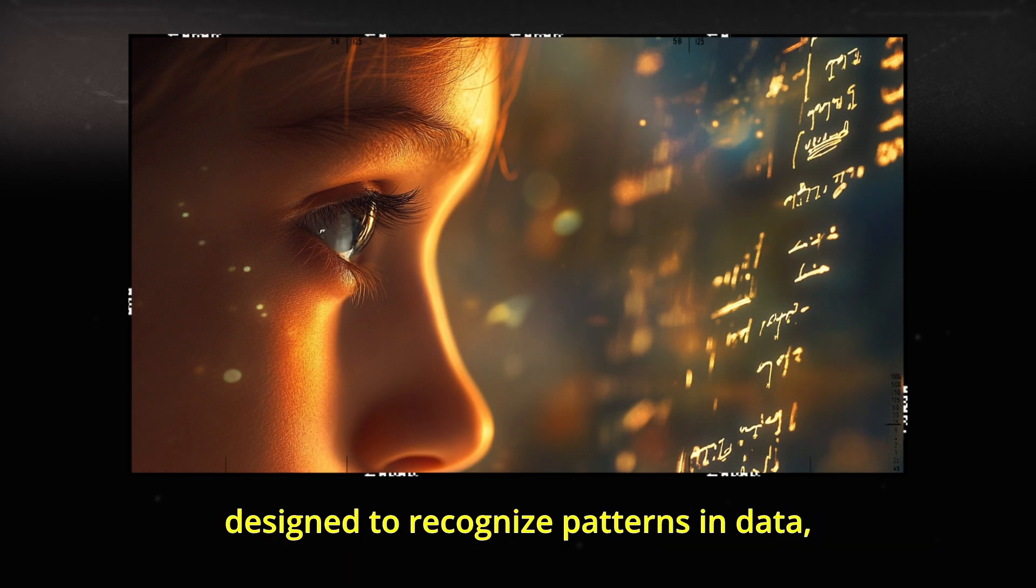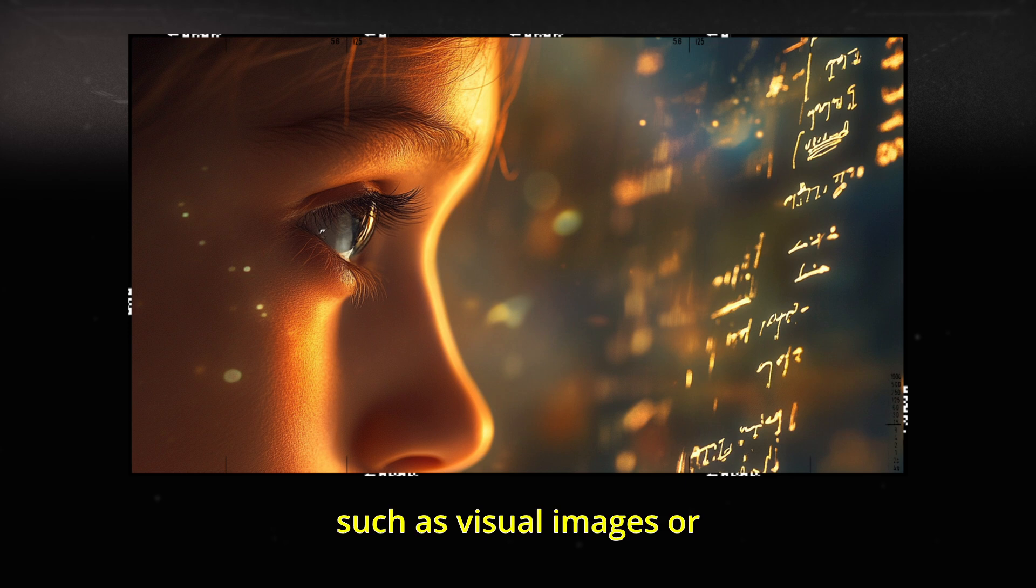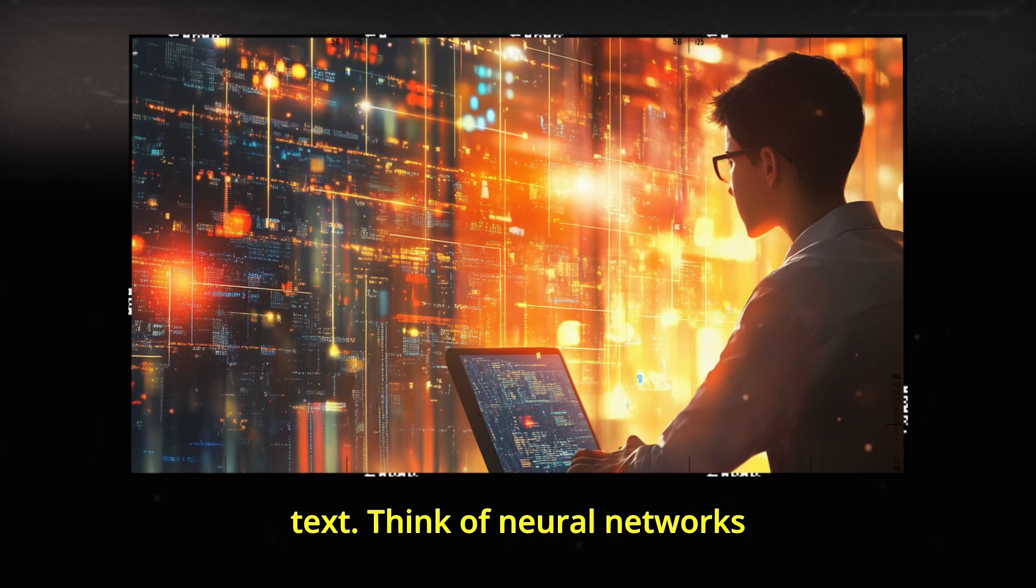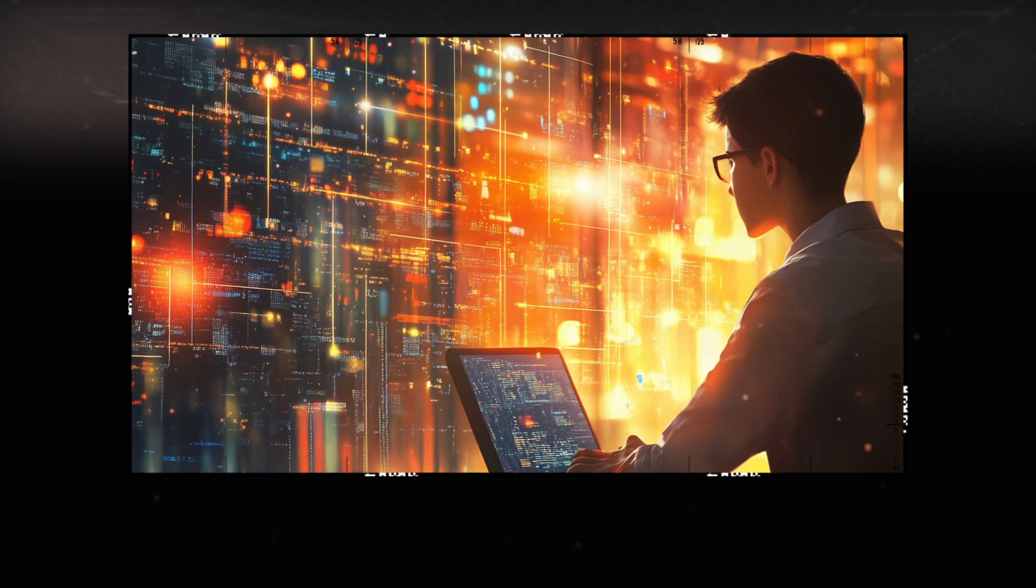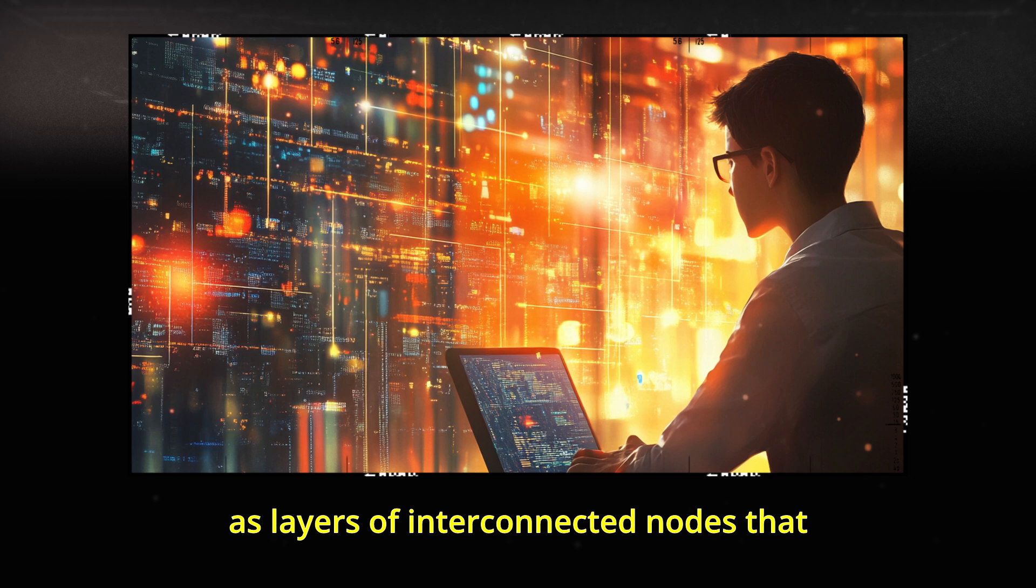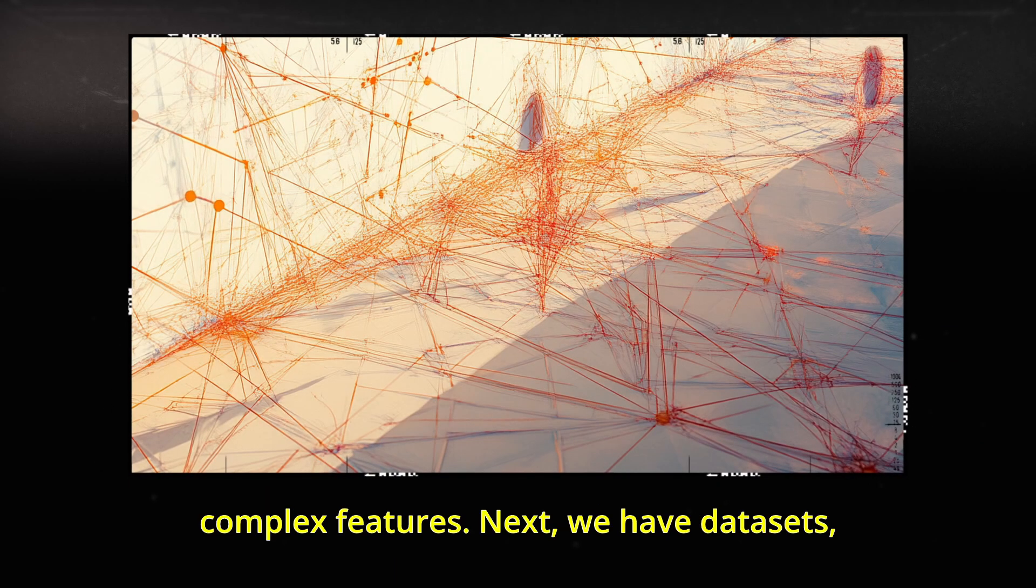The structure is designed to recognize patterns in data, such as visual images or text. Think of neural networks as layers of interconnected nodes that process data step by step, allowing the model to learn complex features.